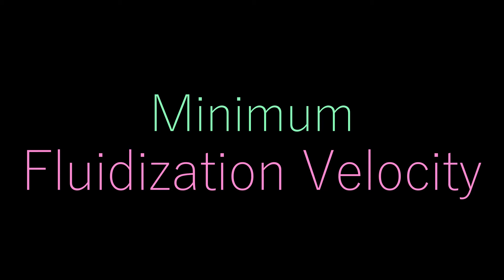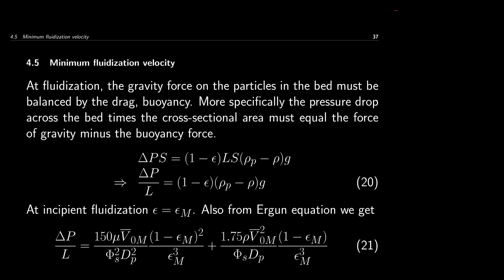We cover the concept called minimum fluidization velocity. The minimum fluidization velocity can be defined as the velocity at which fluidization just occurs. Initially, at very low velocity, the fluid cannot exert enough drag force on the particles, so the particles do not move. However, when it just overcomes the difference between the gravitational force and the buoyancy force, the fluid starts to move and the bed is called fluidized.